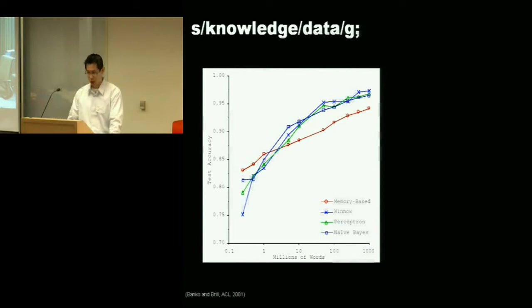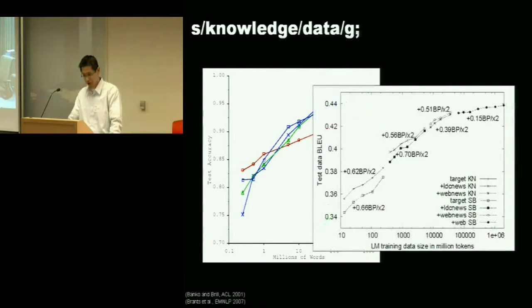So more recently, there's been work by your colleagues in Google research. So this is Brants et al. from Google research. And the same idea applied to machine translation. So on the x-axis here, you have the size of the collection you use to train your language models. And the y-axis, this is on a machine translation task, you have the BLEU score, which is a standard metric for evaluating machine translation performance. So once again, you see the same trend. The more data you throw at it, the better the performance gets.